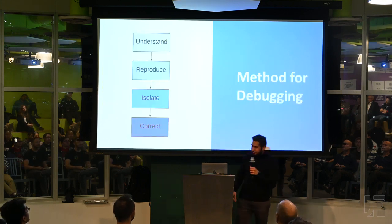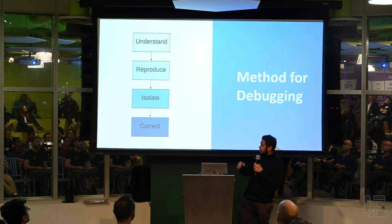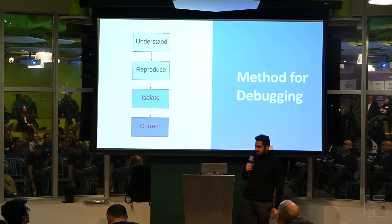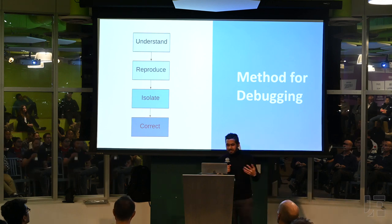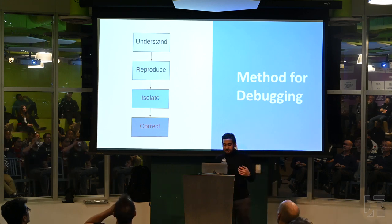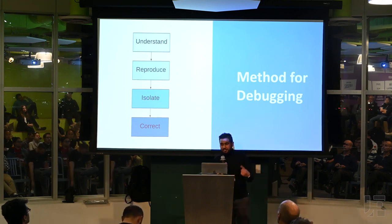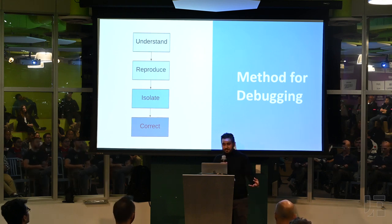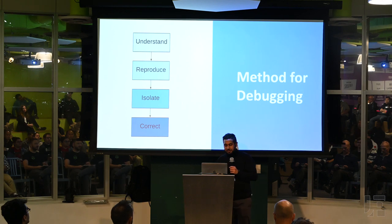In summary, the process is pretty simple: understand, reproduce, isolate, and correct. The three main tips are: avoid documentation as a mode of communication, make sure to write things down, and automate your reproduction of the bug.